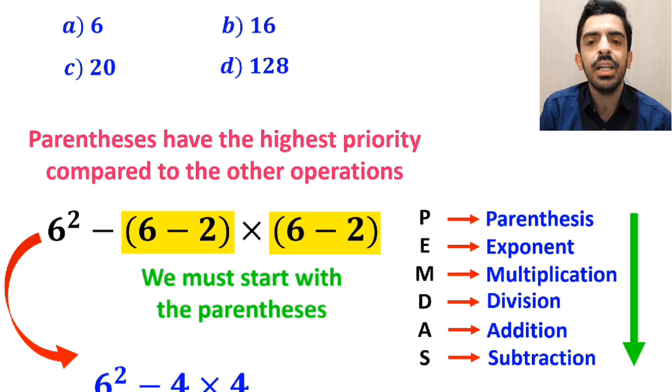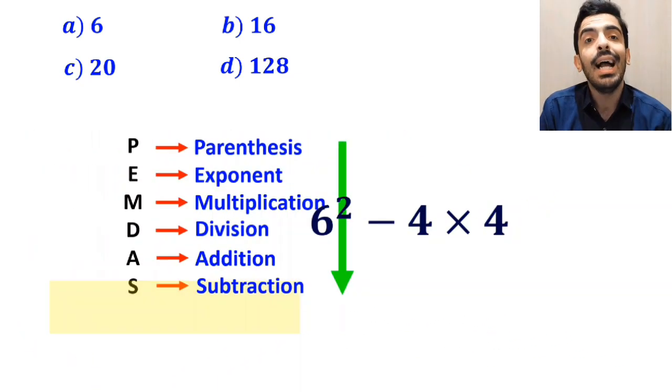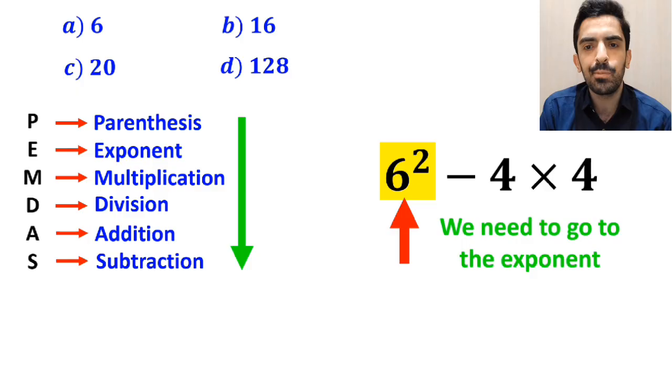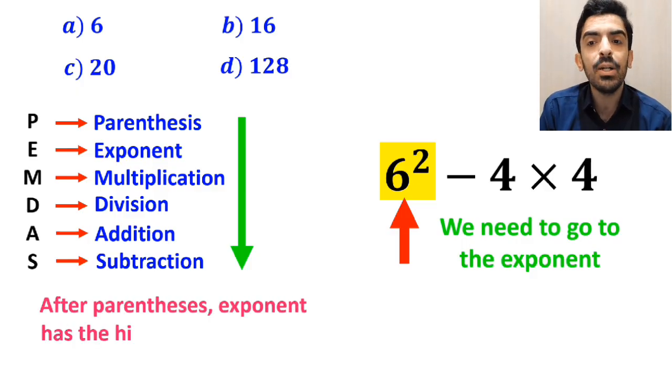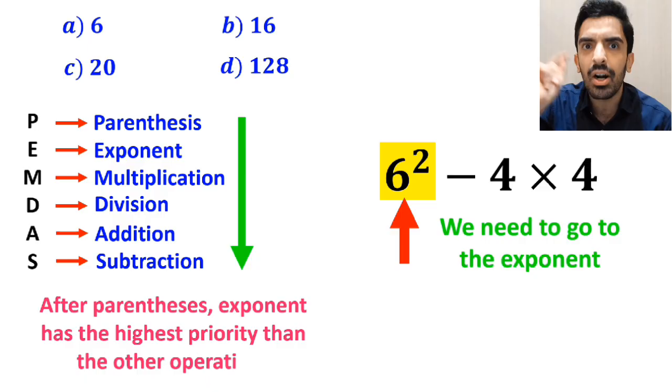Instead of this expression we can write 6 squared minus 4 multiplied by 4. And the next step we need to go to the exponent because in the PEMDAS rule after parenthesis exponent has the highest priority than the other operations.